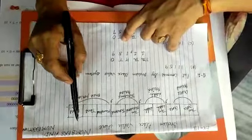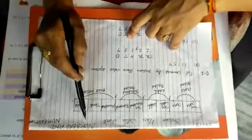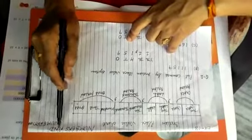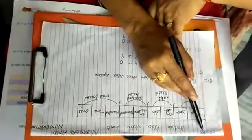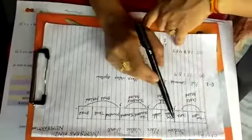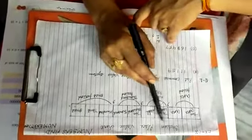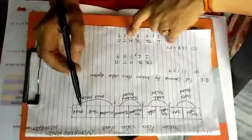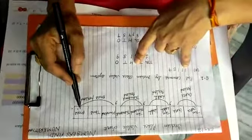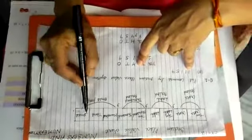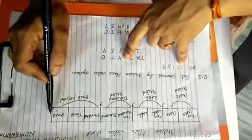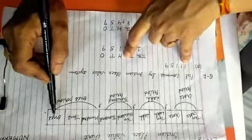Good morning students. Today we are going to start chapter number 1, Numbers and Numeration, exercise 1.3. Firstly, let me tell you about the Indian place value chart. In the Indian place value chart, places start from the back side, meaning the right hand side.